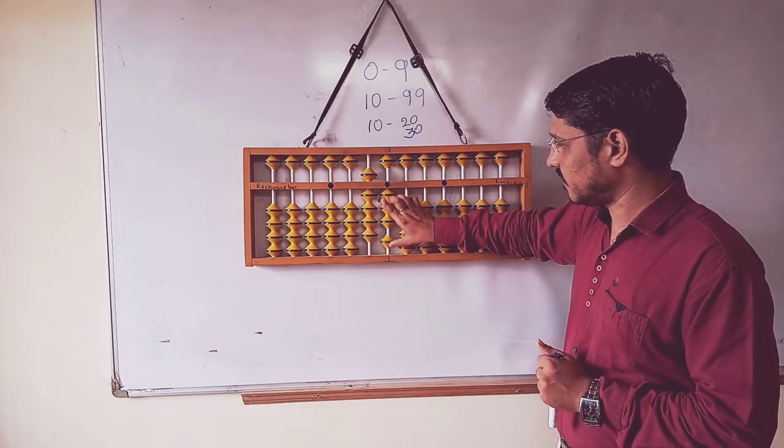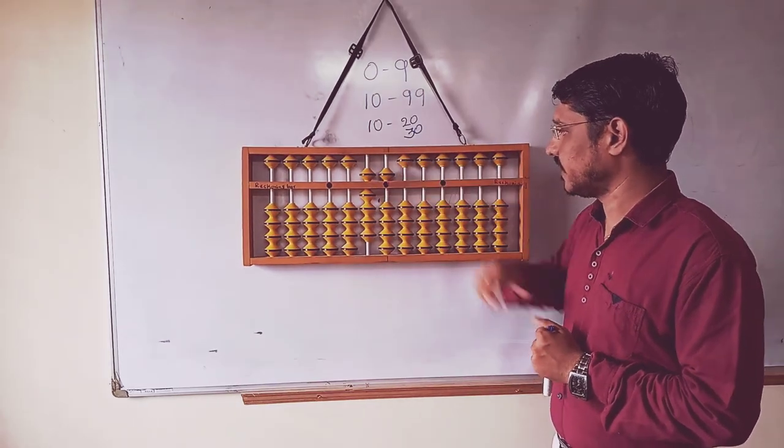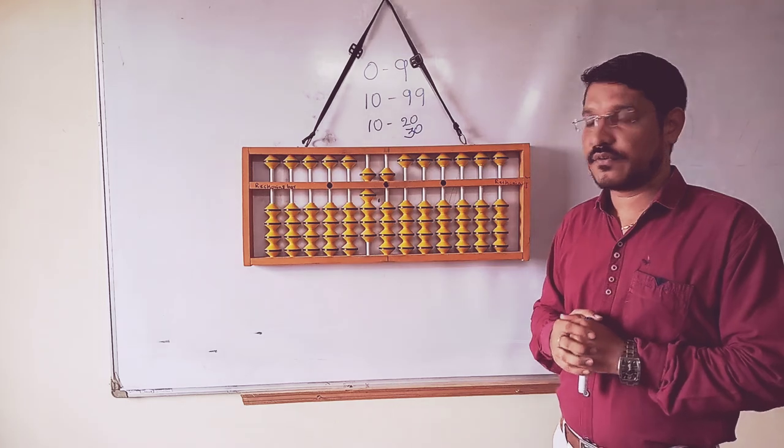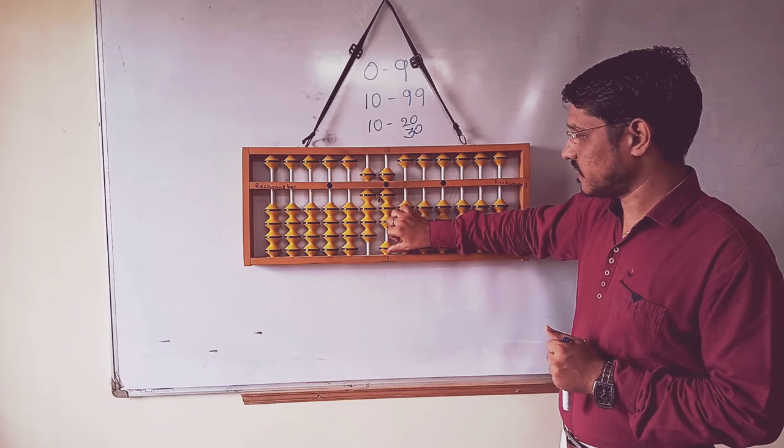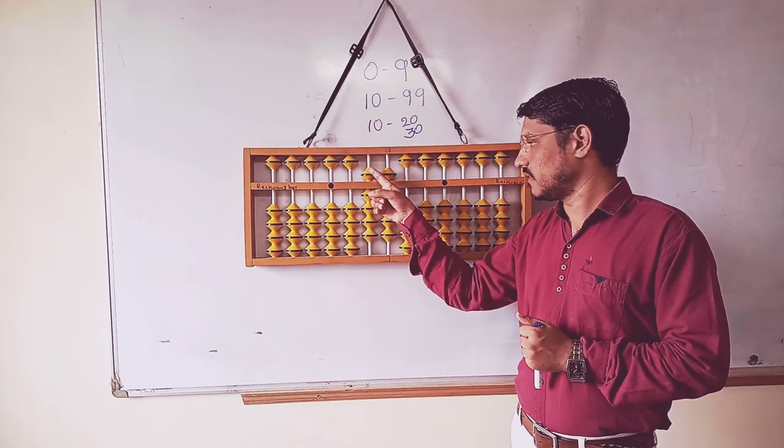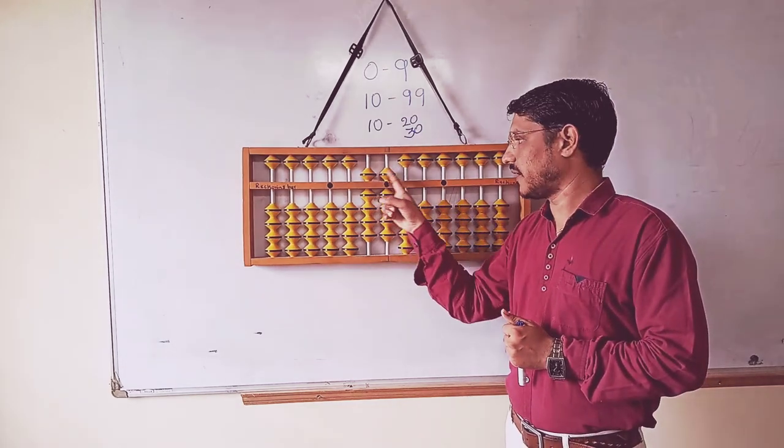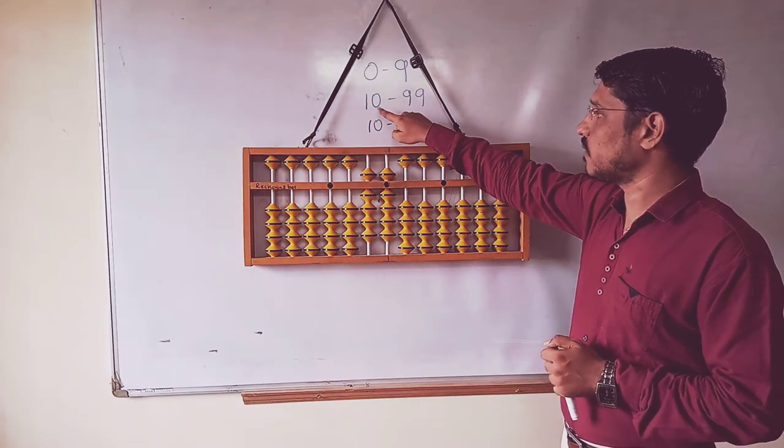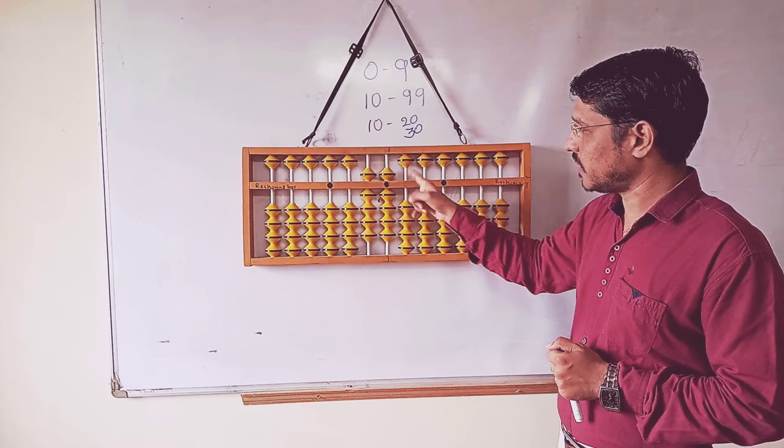Next one is 90, 91, 92, 93, 94. Again 95, 96, 97, 98, 99. It is 99. This one is also 9 and this one is also 9, that is 99.